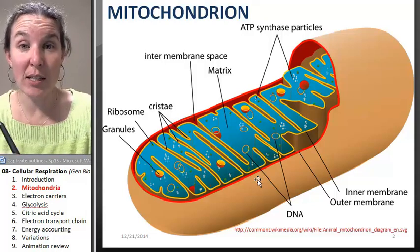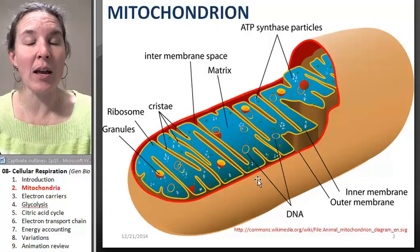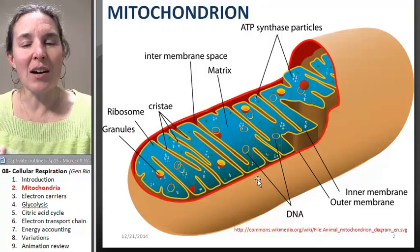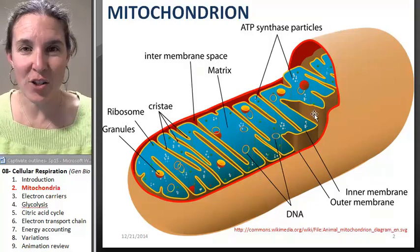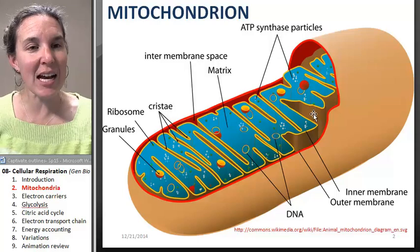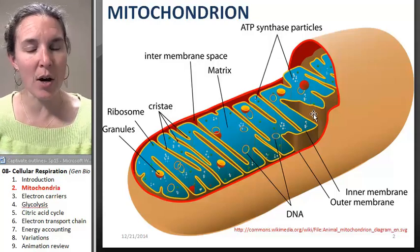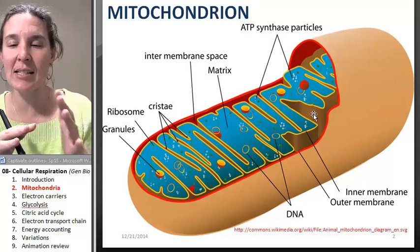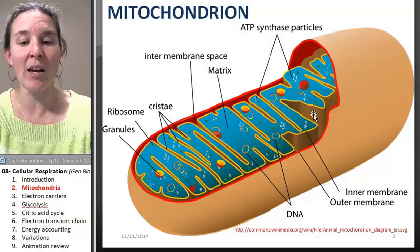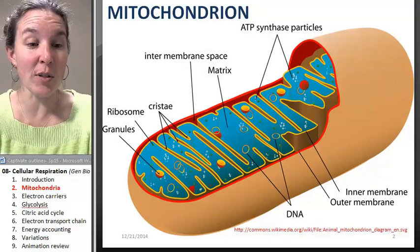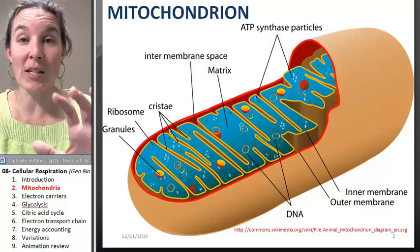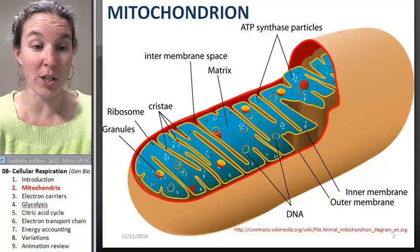Mitochondria are important in the process of cellular respiration. There are also molecules called electron carriers, and these guys are key players in this process. So we're going to take a second to identify what is this electron carrier you speak of, and then we'll move on to the actual process of cellular respiration.